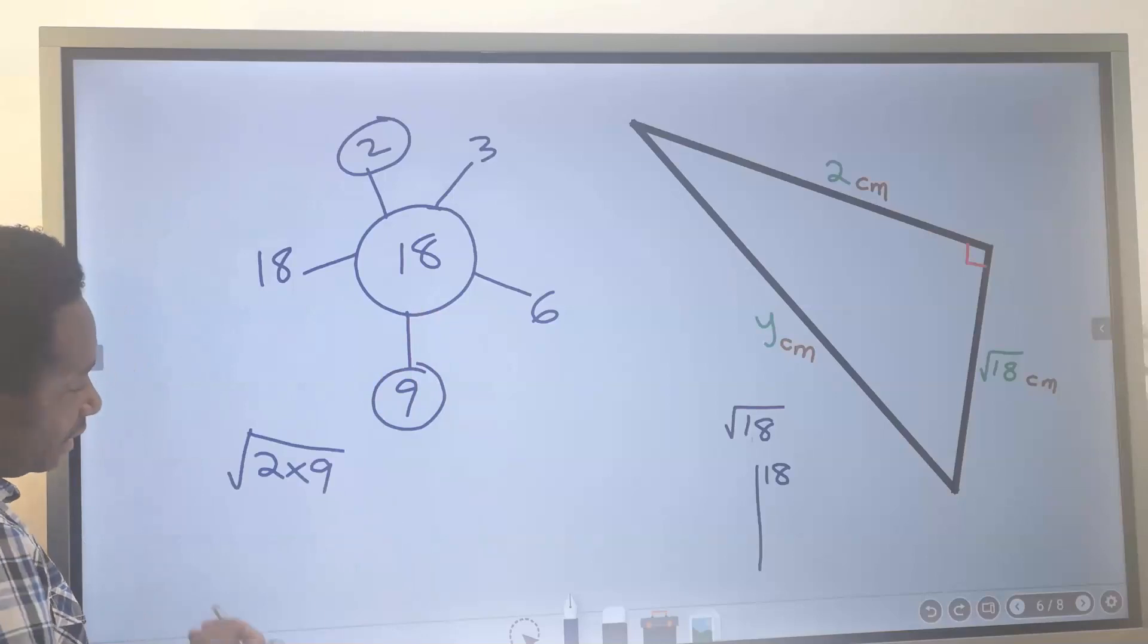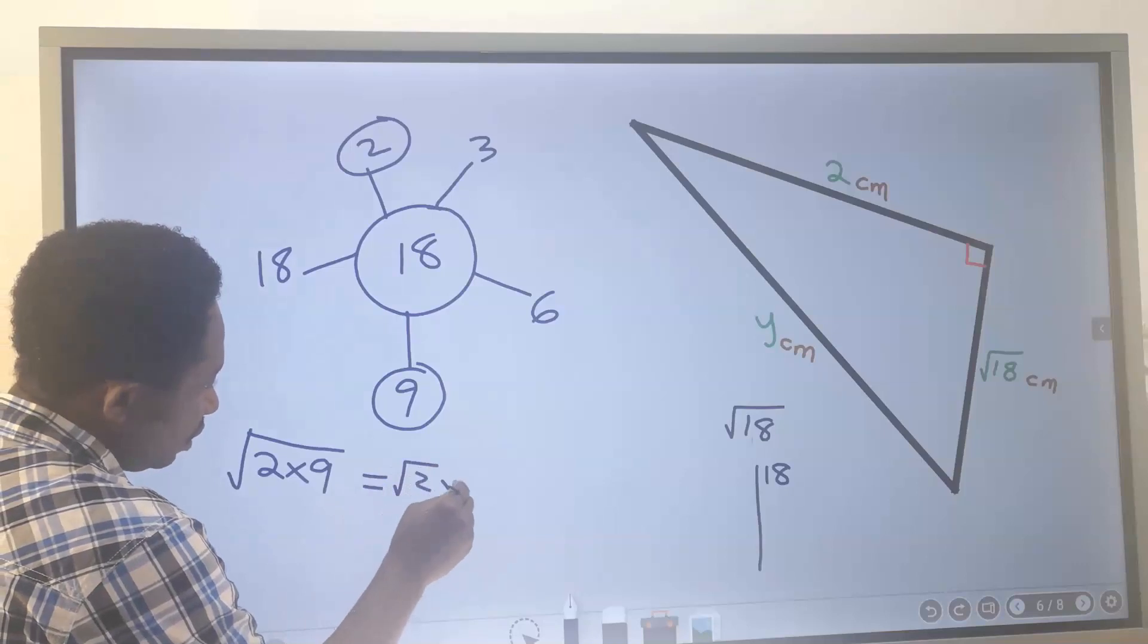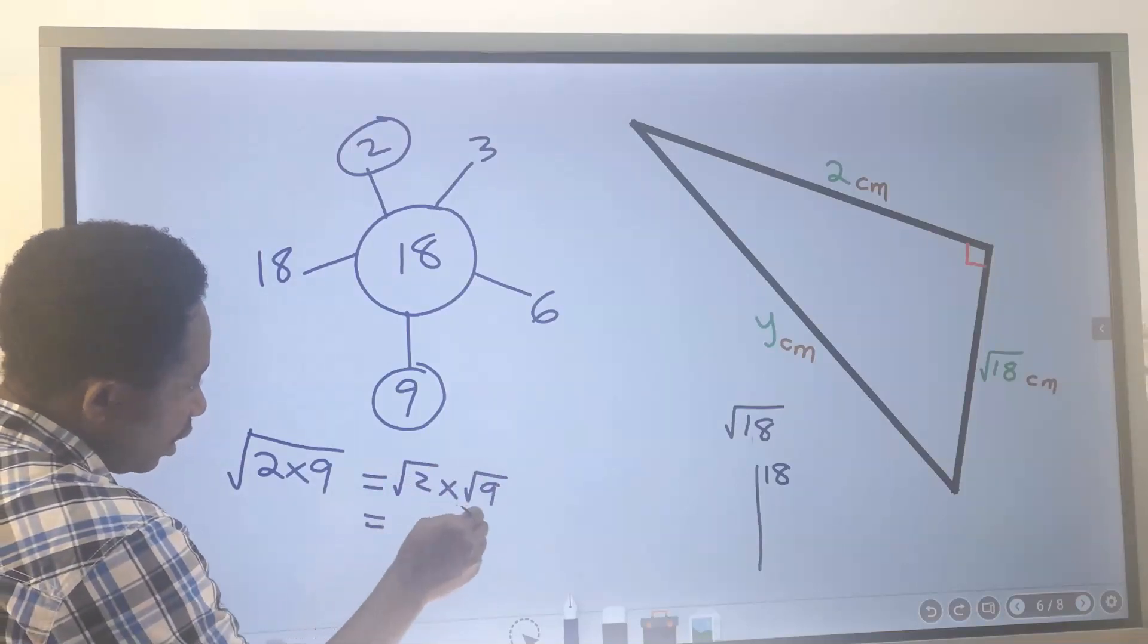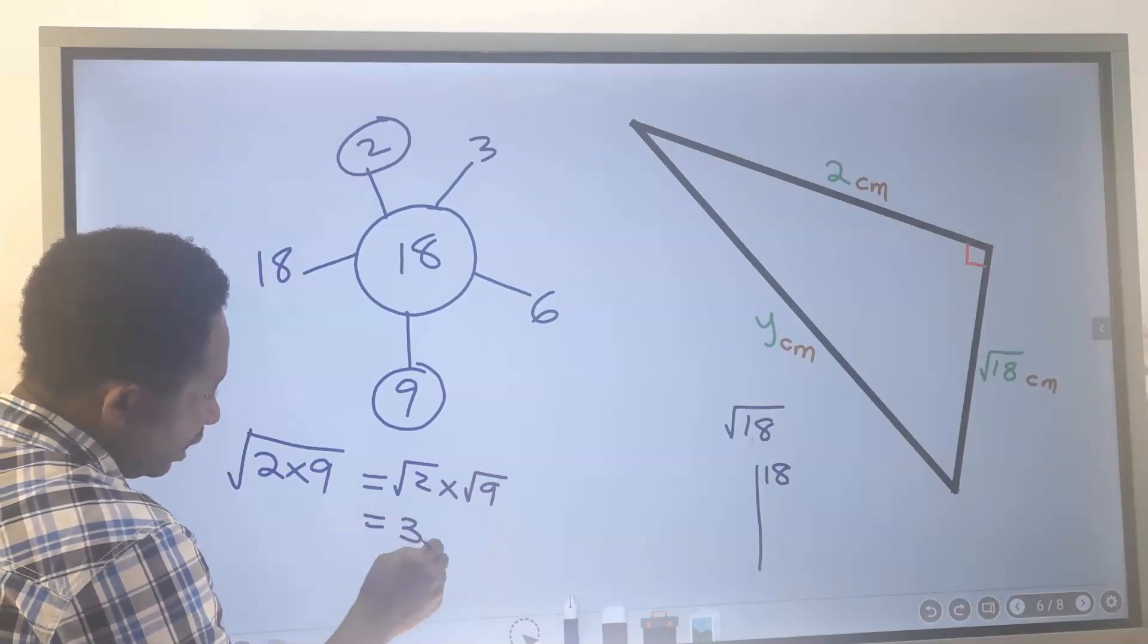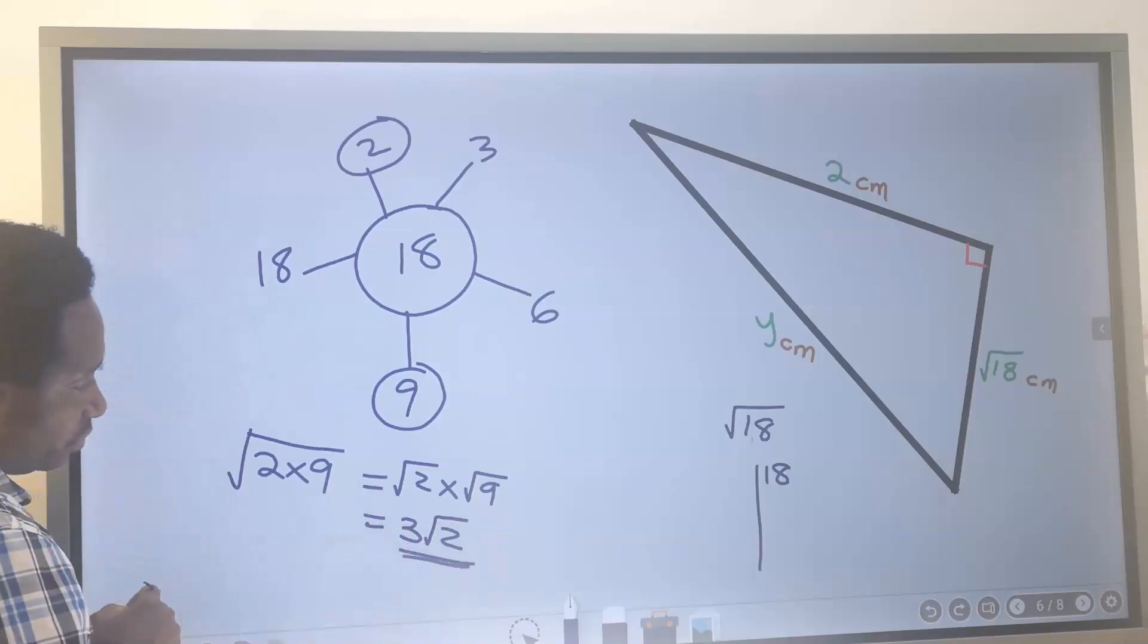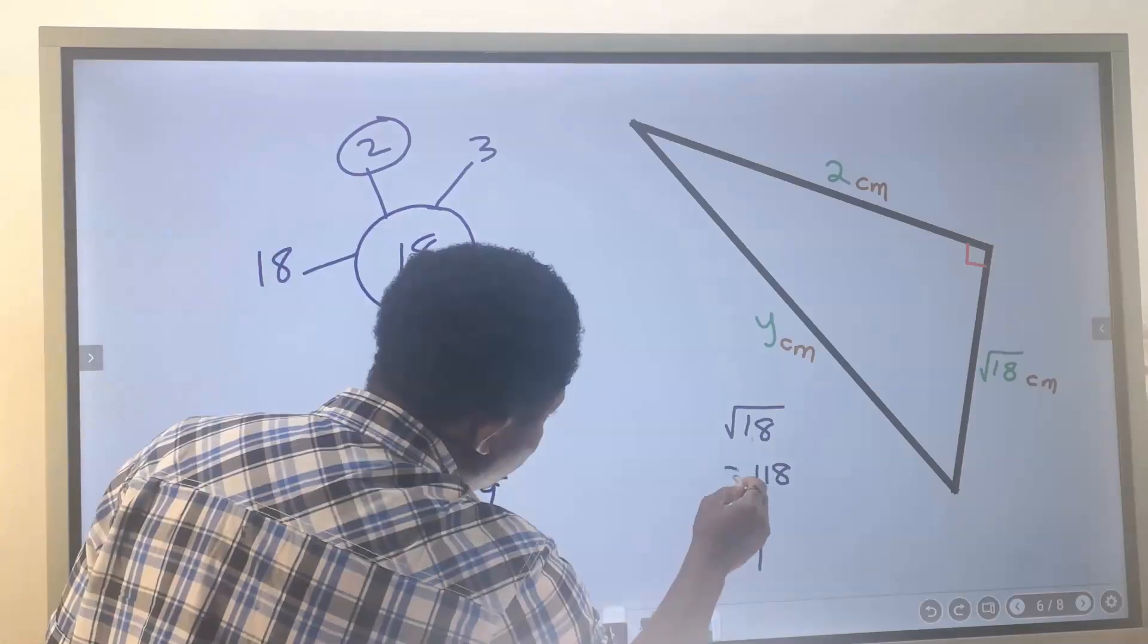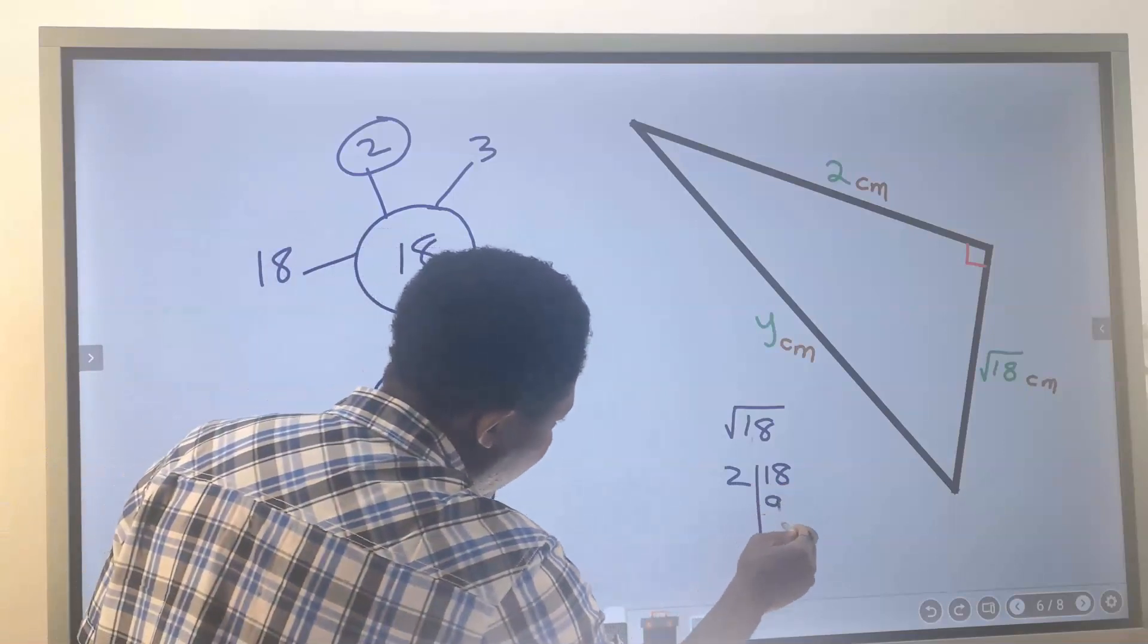Next we're going to apply the law of surds that says the square root of 2 times the square root of 9. The square root of 9 is 3, and this will remain in its square root. Instead of using this, I can use this by saying 2 goes into 18 and we have 9.